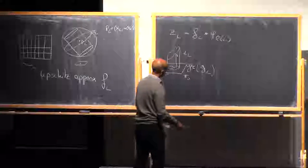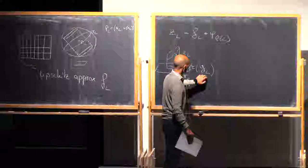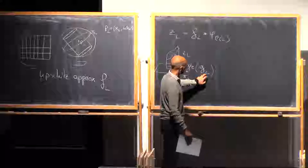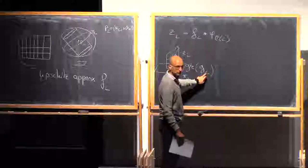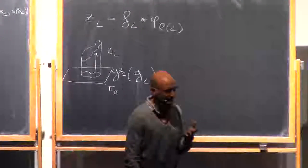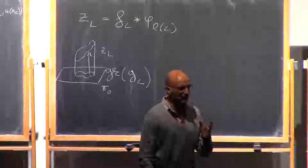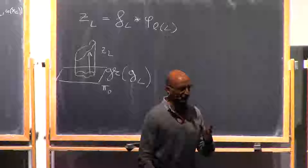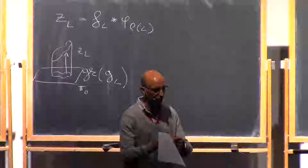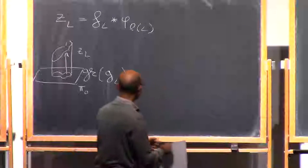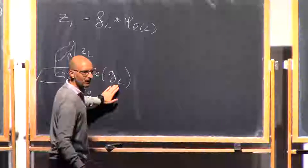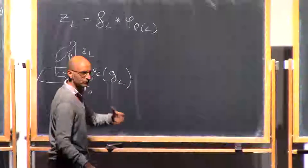I'm not going to show you the second estimate — I don't think I will have time — but I will focus on getting a C3 estimate for this GL. Actually along the way you will see, at least intuitively, why you should be able to get the correct estimates for the difference between the functions in two nearby cubes. The proof of the C3 estimate will give you an idea of what is happening for nearby cubes.